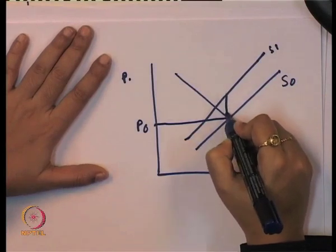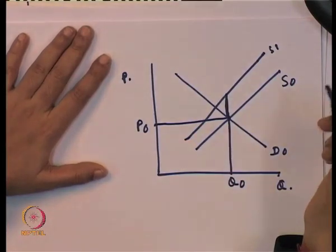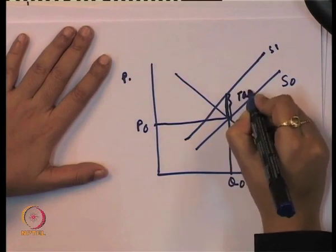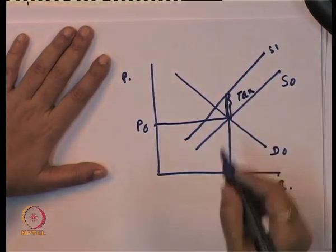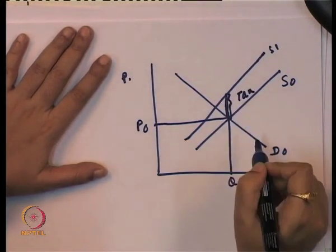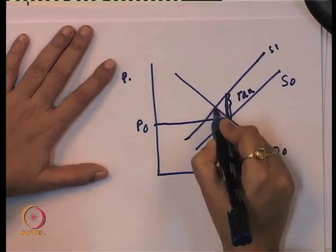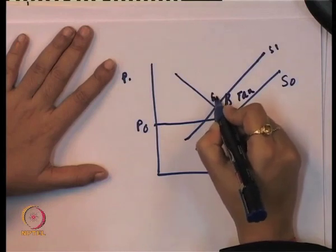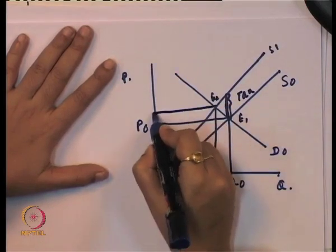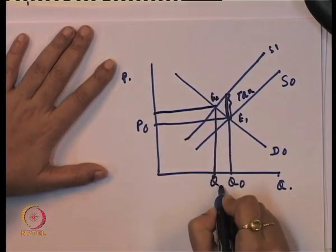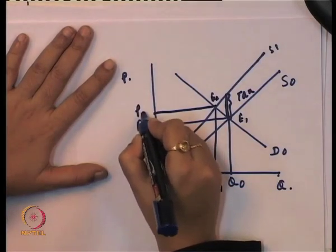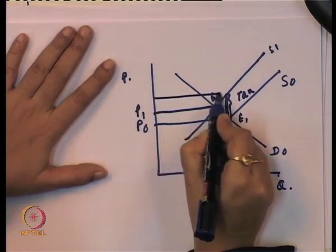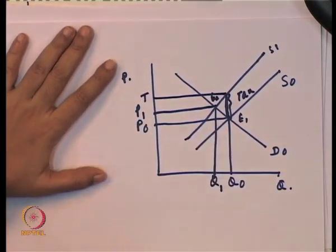Here we are representing the amount of tax through the change in supply — this is the total amount of tax being imposed. When the supply moved from S0 to S1, the equilibrium point changes from E1 to E2. In this case, price and quantity both change. Quantity is Q1 and price is P1. This is the total amount of tax.